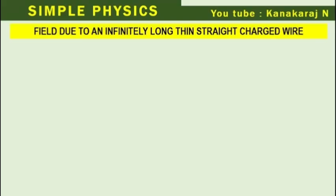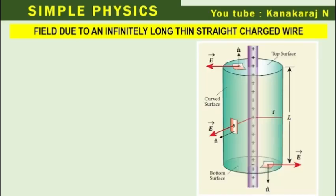Electric field due to an infinitely long thin straight charged wire. Here you have a diagram. The thin charged wire is an axis of a Gaussian cylindrical surface, which has a top and bottom circular surface and a curved surface.